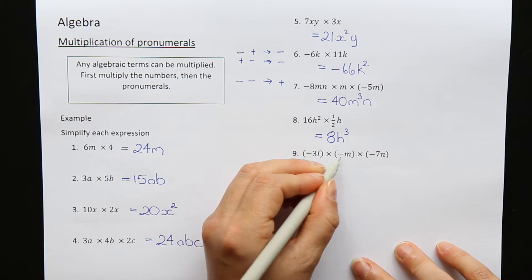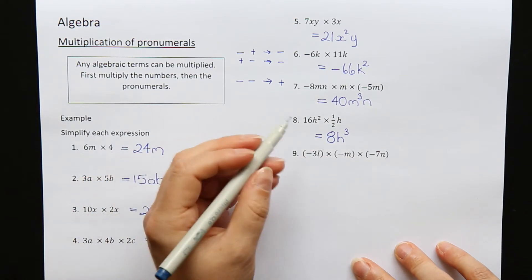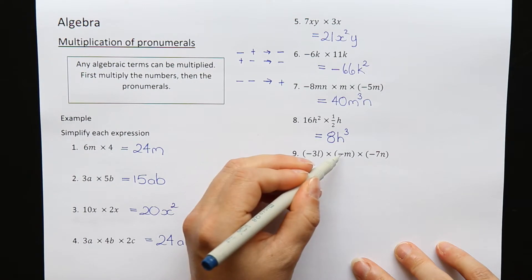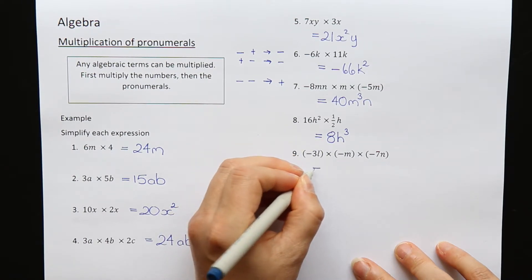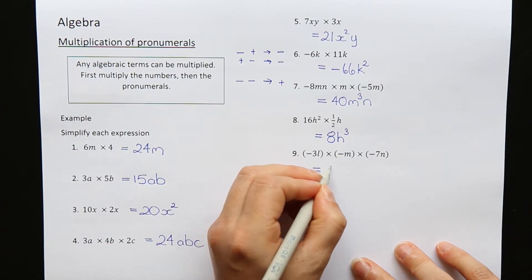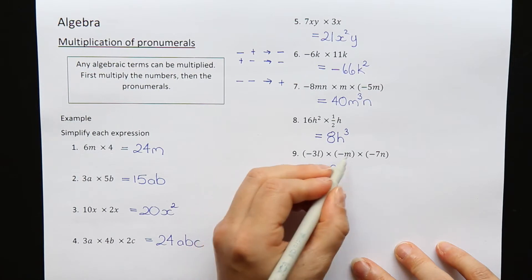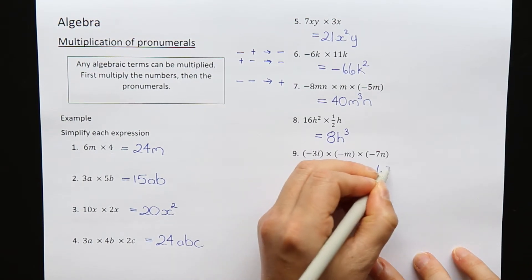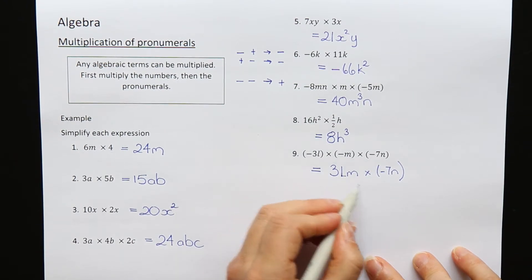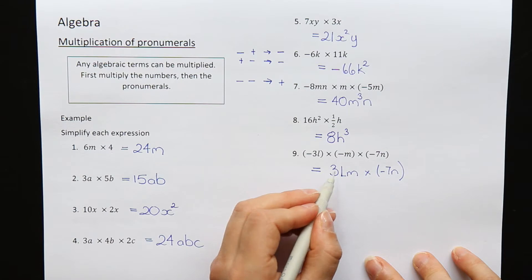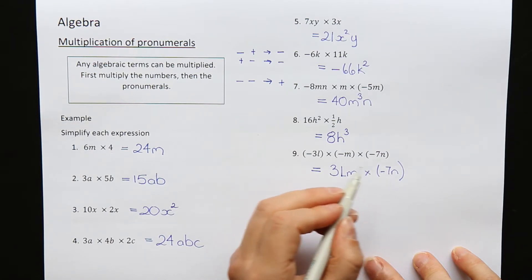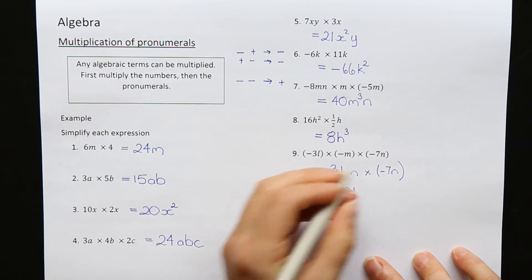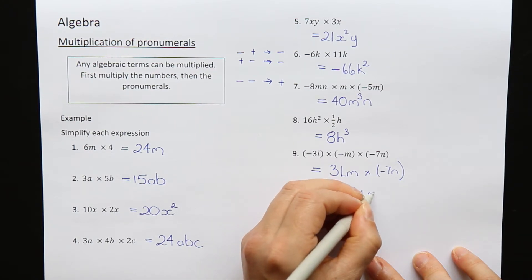Question 9: minus 3l times minus m times minus 7n. Let's look at the numbers. Minus 3 times minus 1—a minus and a minus make a positive 3. Then I multiply this third term. I have a positive 3 times a negative 7. A positive and a negative means I'm going to get a negative answer. 3 times 7 is 21. The letters are lmn.